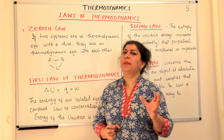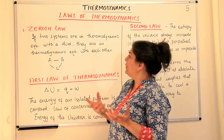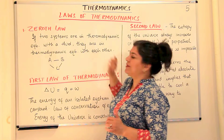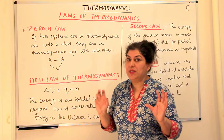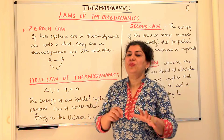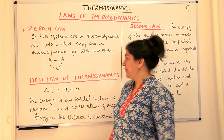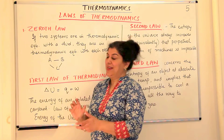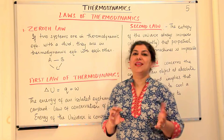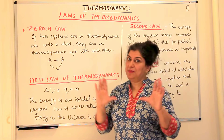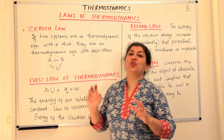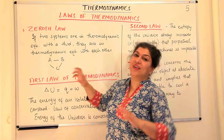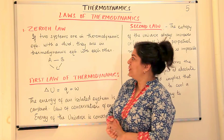The zeroth law gives you an idea about heat or about energy. It says that if two systems are in thermodynamic equilibrium with a third one, then they have to be in thermodynamic equilibrium with each other. That is, if A and C have the same internal energy and B and C also have the same internal energy, then A and B would also have the same internal energy.